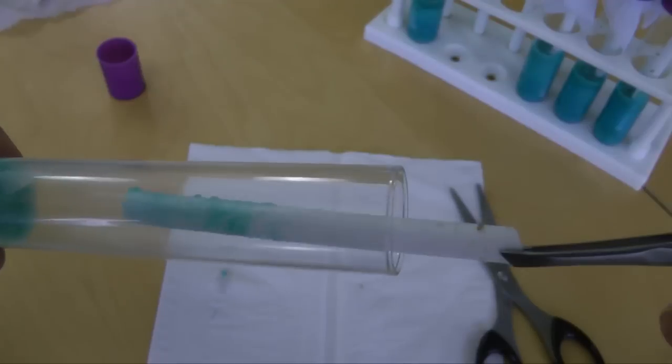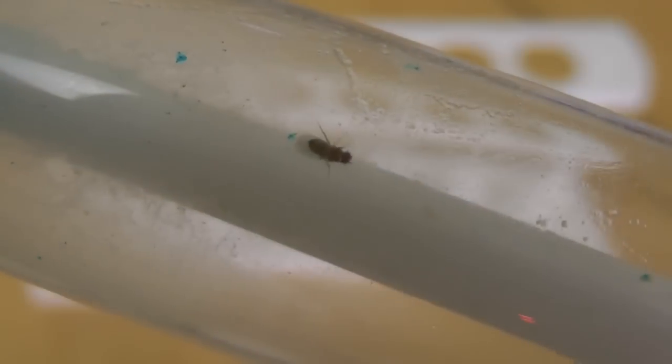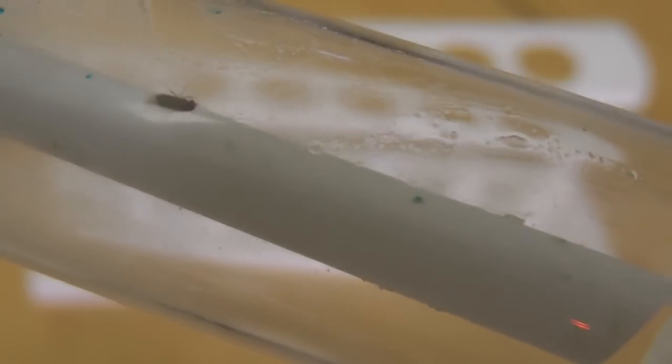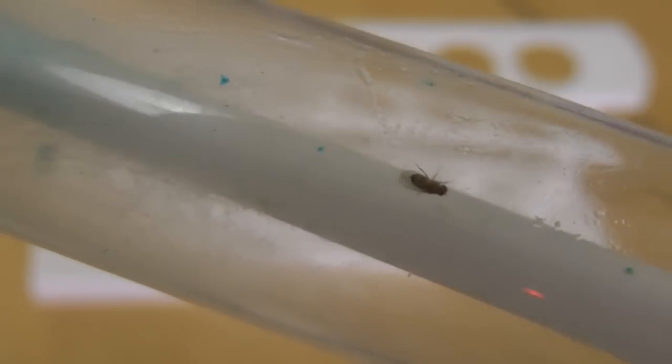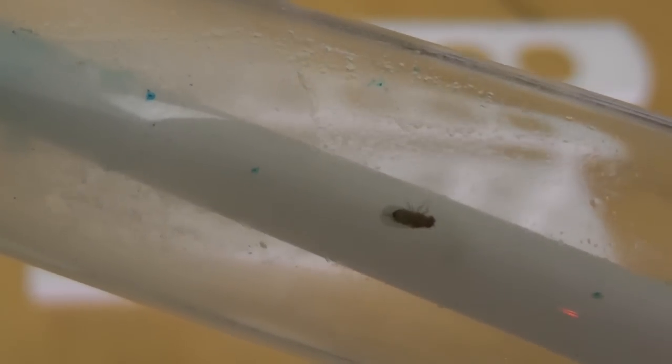I place each pupa in a separate tube. When the flies hatch, we can determine if we have a male or female fly. If we have a female fly, she has been isolated and not had a chance to mate. A virgin red-eyed fly.